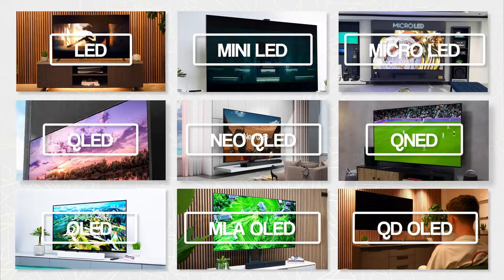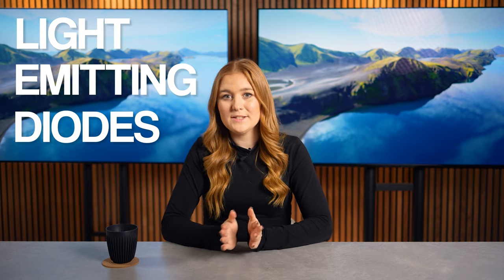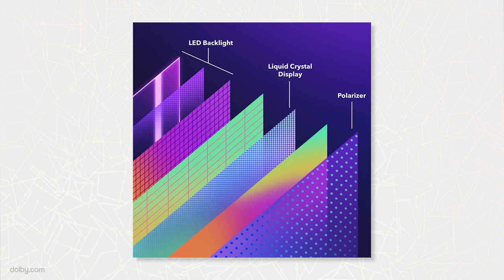OLEDs can struggle to hit those higher brightness levels and come with a higher price tag. Plus, there is the burn-in fear factor with OLED, but more on that later. LED TVs use light emitting diodes for backlighting and a liquid crystal display LCD panel to create images. The LEDs generate the light behind the screen and the LCD panel acts as a shutter to control how much of that light passes through to create the images. There are a few ways LED TVs can be backlit: edge lit and full array backlit.